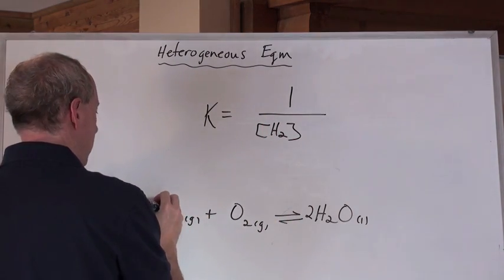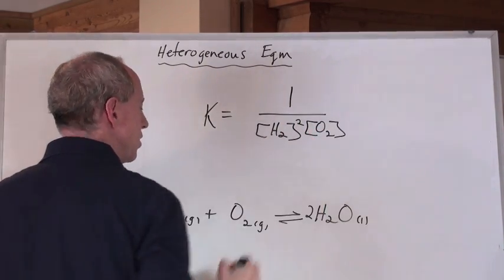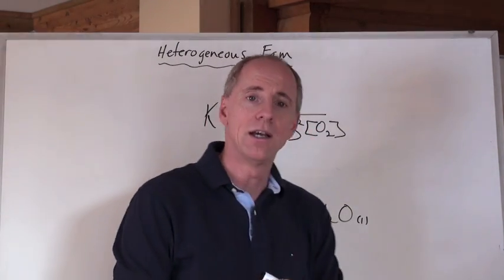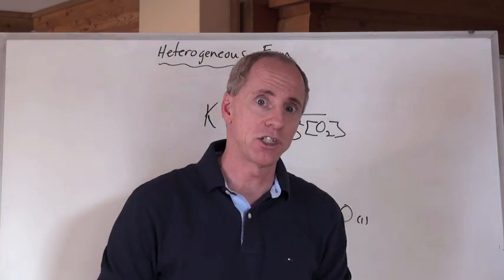And by the way, you've got to balance that right, eh? So there's a two in front there, so that's going to be squared divided by the concentration of the O2. And that would be the way to write that form here in the law of mass action.